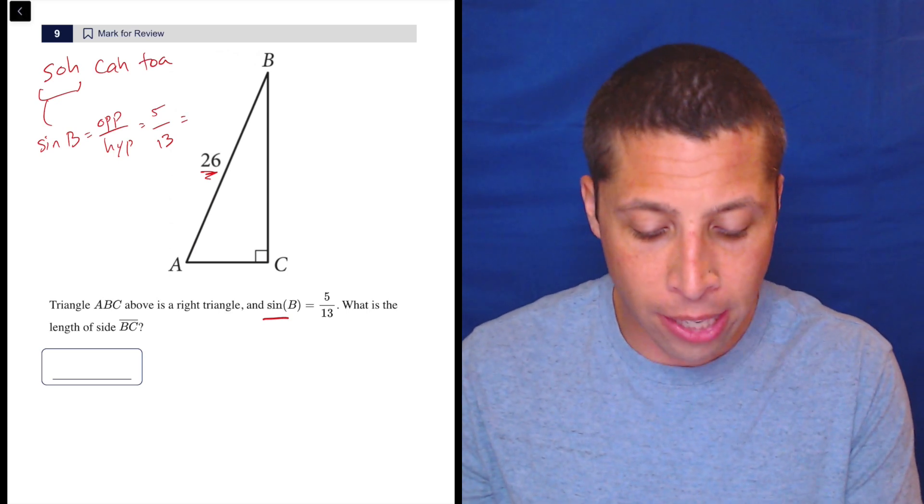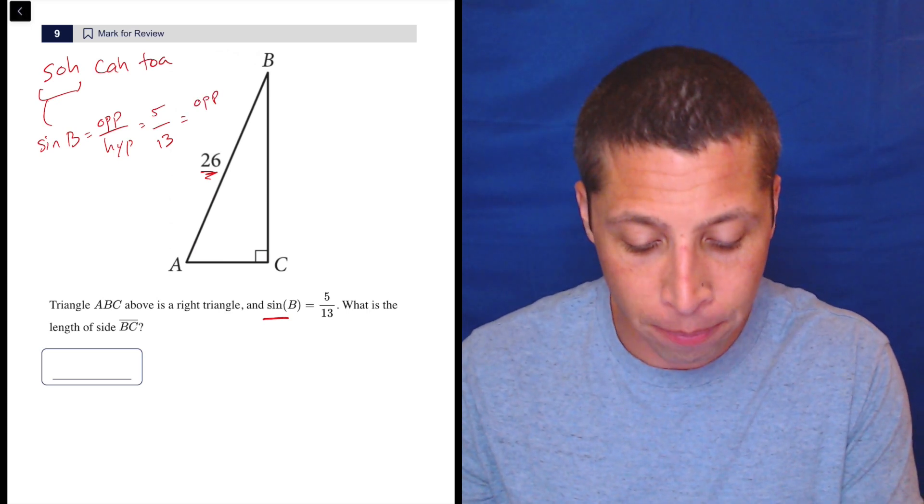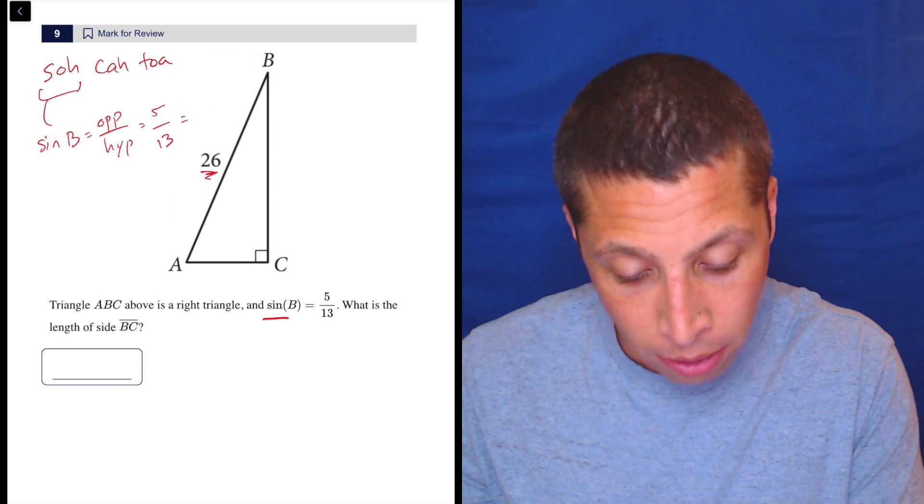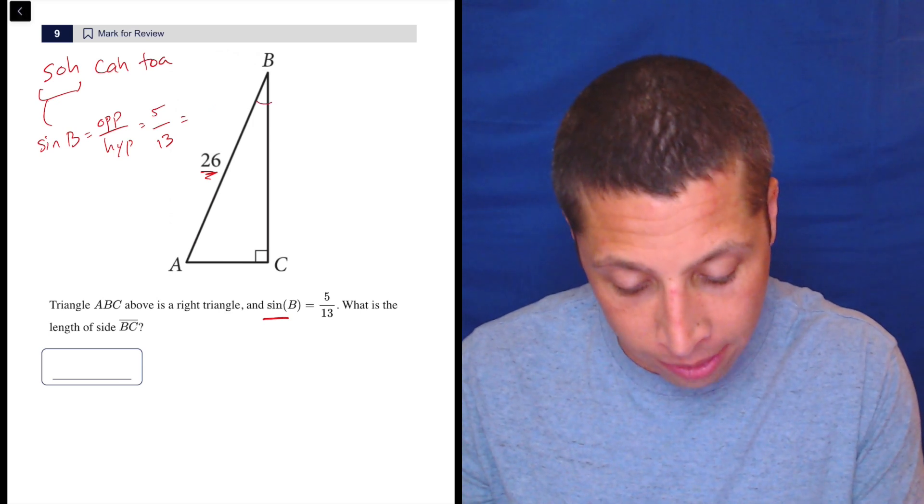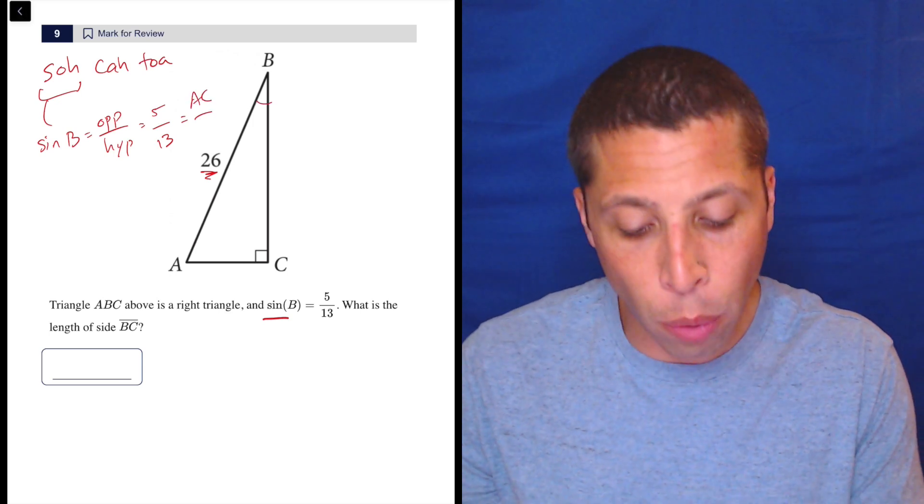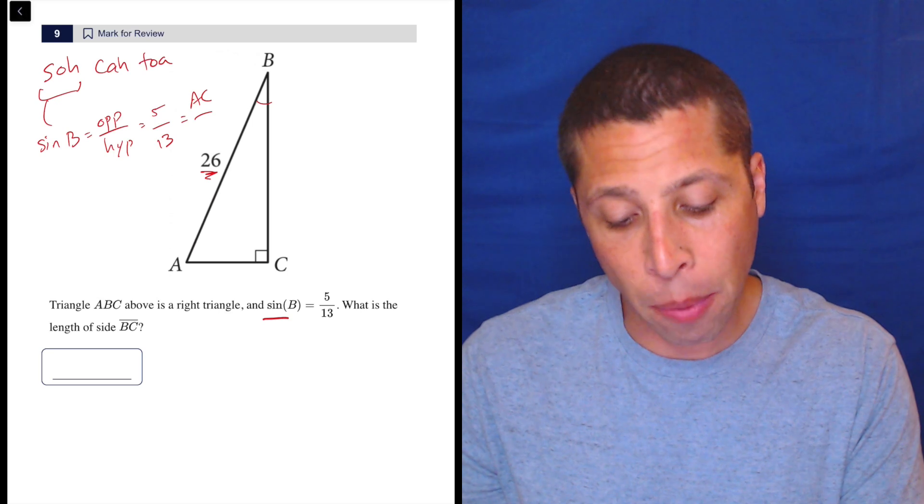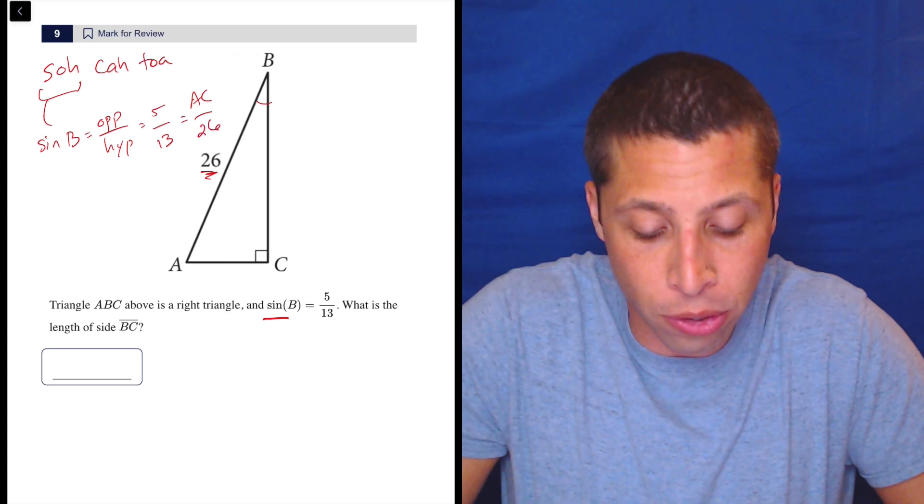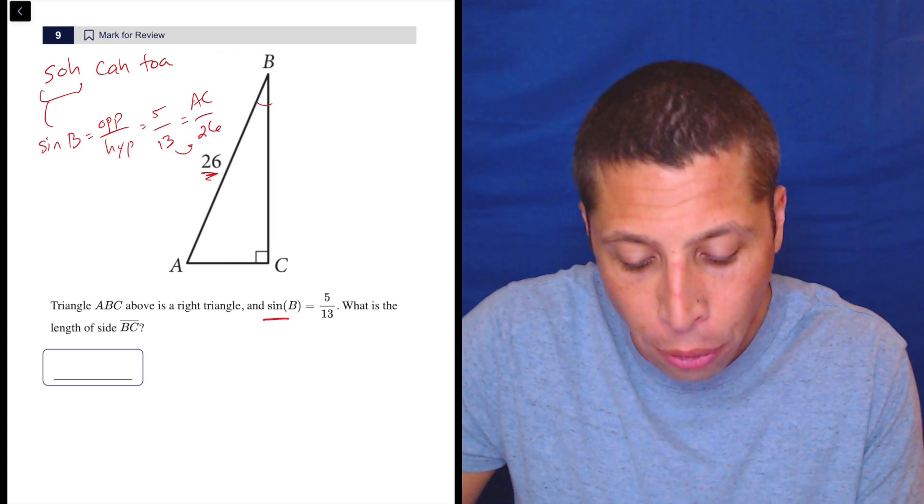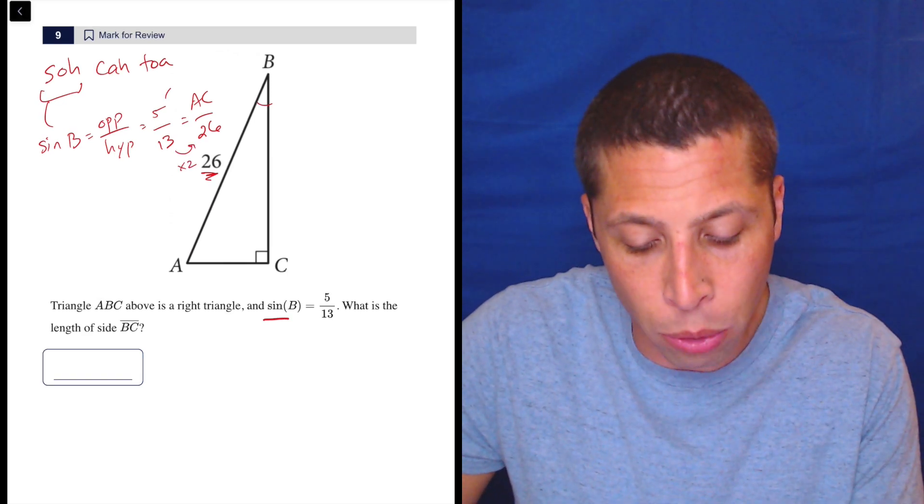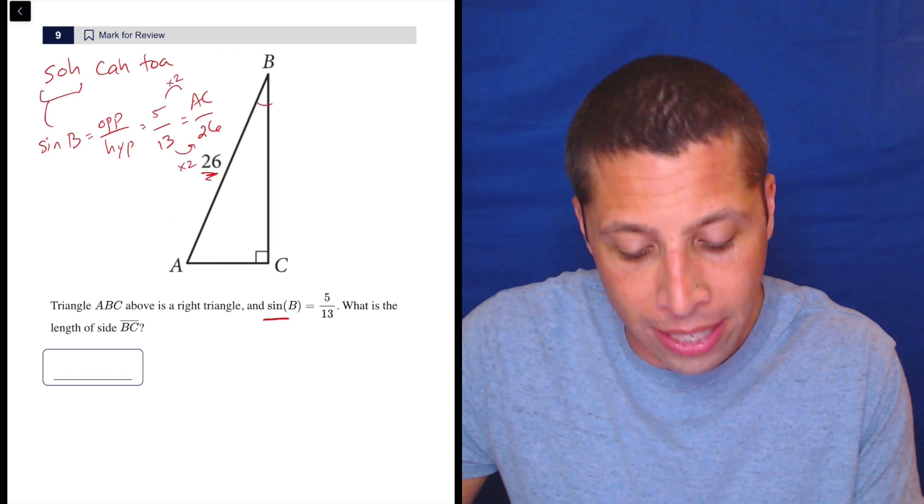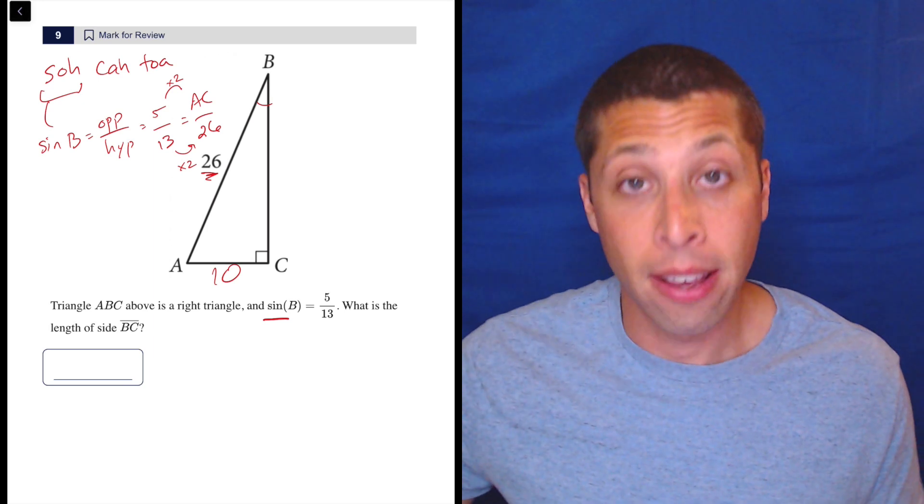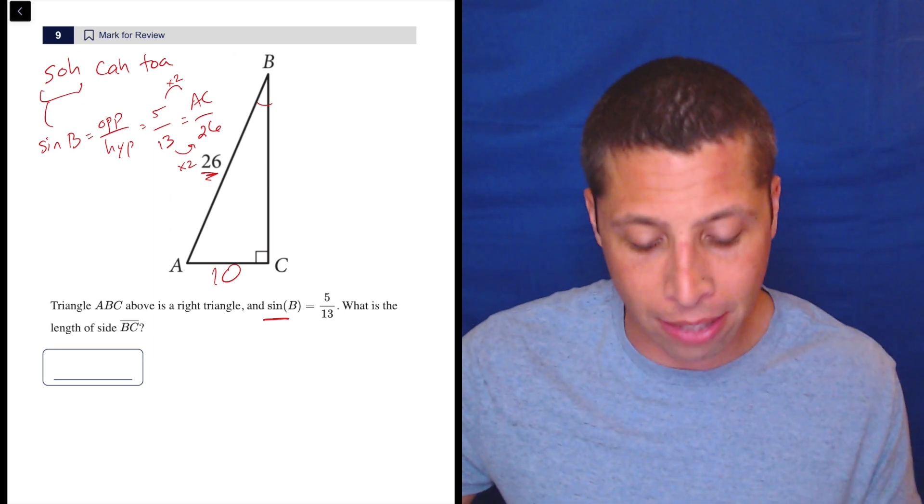So another way to look at it is the opposite side that we're missing—let's just put it in. What is the opposite of B? It's AC. It's going to be in the same proportion as 5 to 13, and the 26 is the actual hypotenuse, and we can see what happened here. The 13 got multiplied by 2, so we should multiply by 2 to get that AC is 10. You can cross multiply and get that, but that's the way to do it.